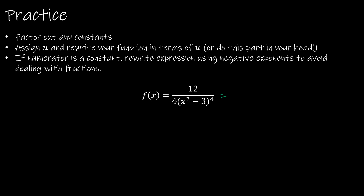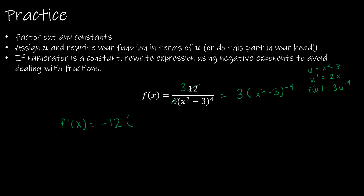For this question, I'm going to use a rewrite strategy. I'm going to reduce 12 and 4 to 3 and 1. So now I have 3 times (x squared minus 3) to the negative 4. Finding the derivative, I'll use the chain rule. If using u substitution: u equals x squared minus 3, u prime equals 2x, and f of u equals 3u to the negative 4. So f prime of u is 3 times negative 4, which is negative 12, times (x squared minus 3) to the negative 5.